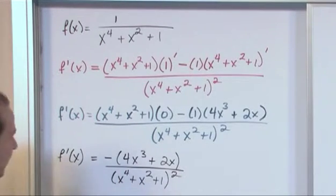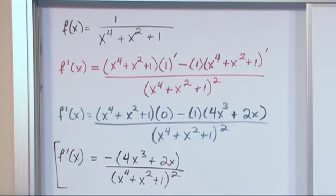So it's just better to leave it tidy like this. So this is the answer. On the top you'll have negative 4x cubed plus 2x. And on the bottom you'll have x to the fourth plus x squared plus 1 all raised to the power of 2.